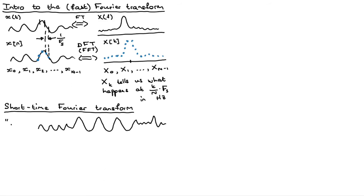This is the word 'dress'. Now what will happen is the frequency content, if you look at the first few samples of this word, will be very, very different from the last samples. And if we just took the discrete Fourier transform of this whole thing, we will actually run into issues because it's just going to have frequency content all over the place. We actually want to capture the finer grained things inside the signal.